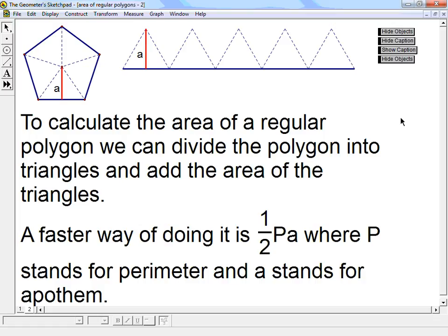To calculate the area of a regular polygon, we can divide the polygon into triangles and add the area of the triangles, and that's one way we can do it. But a faster way of doing it is one-half times P times A, where P stands for perimeter and A stands for apothem.